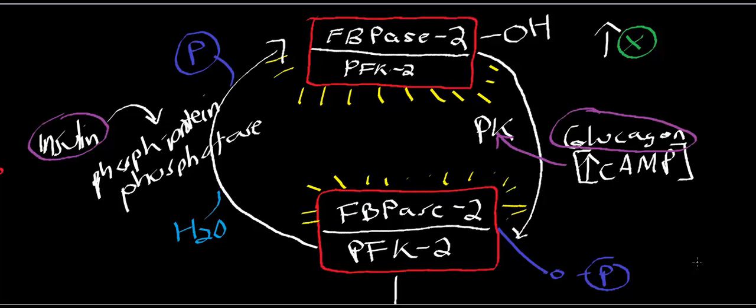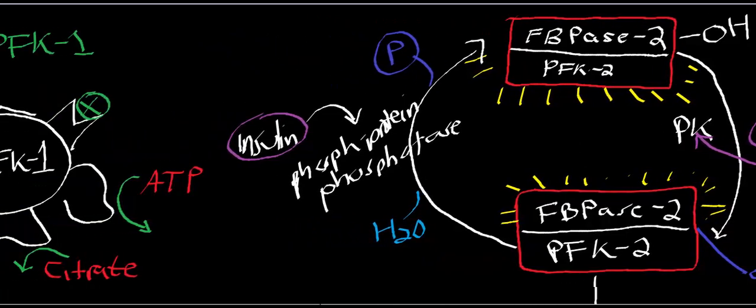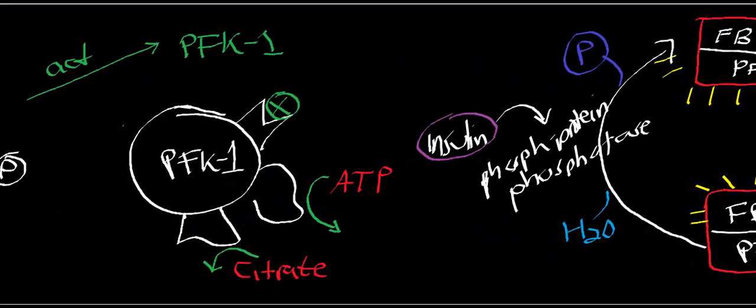What we had been talking about was really just the allosteric effect on PFK1. PFK1 is an allosteric enzyme, and normally when we're stimulating glycolysis, we have to have fructose 2,6-bisphosphate present. And normally, in the absence of it and in the presence of ATP and citrate, PFK1 is rendered inactive.